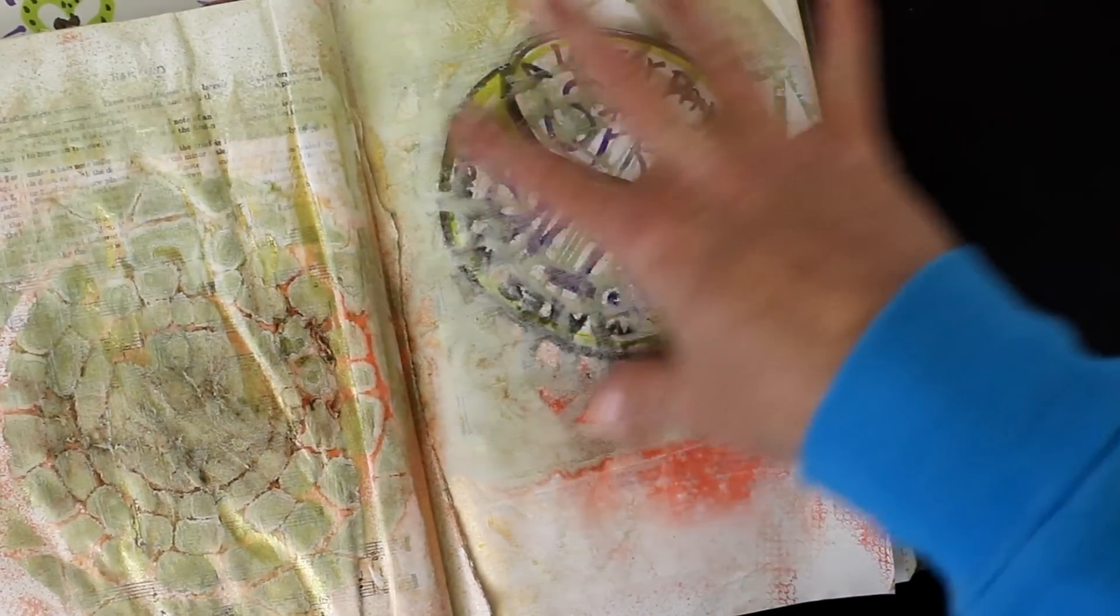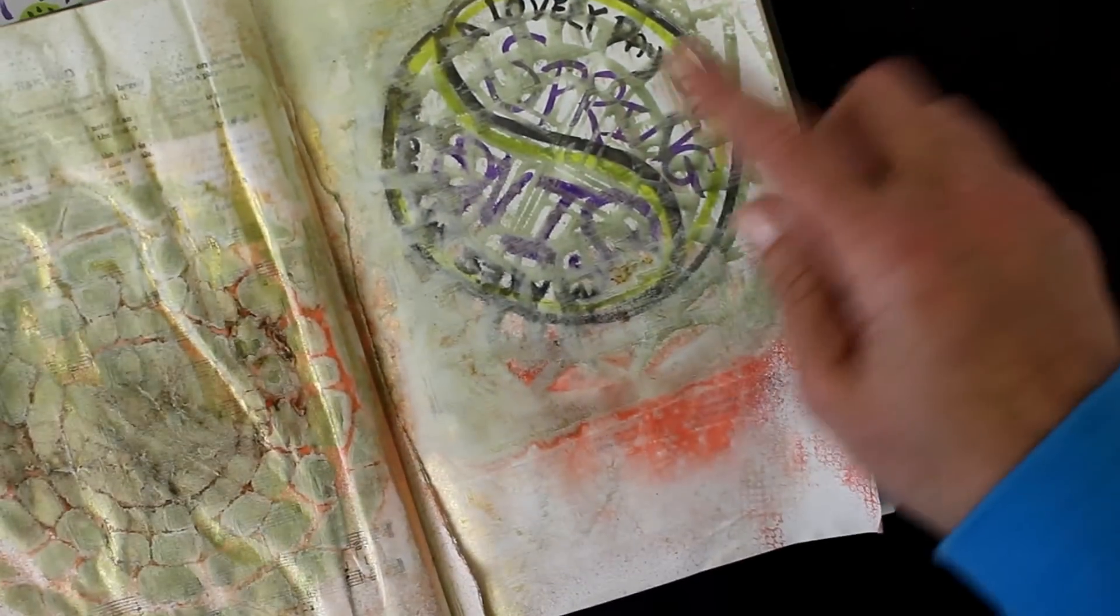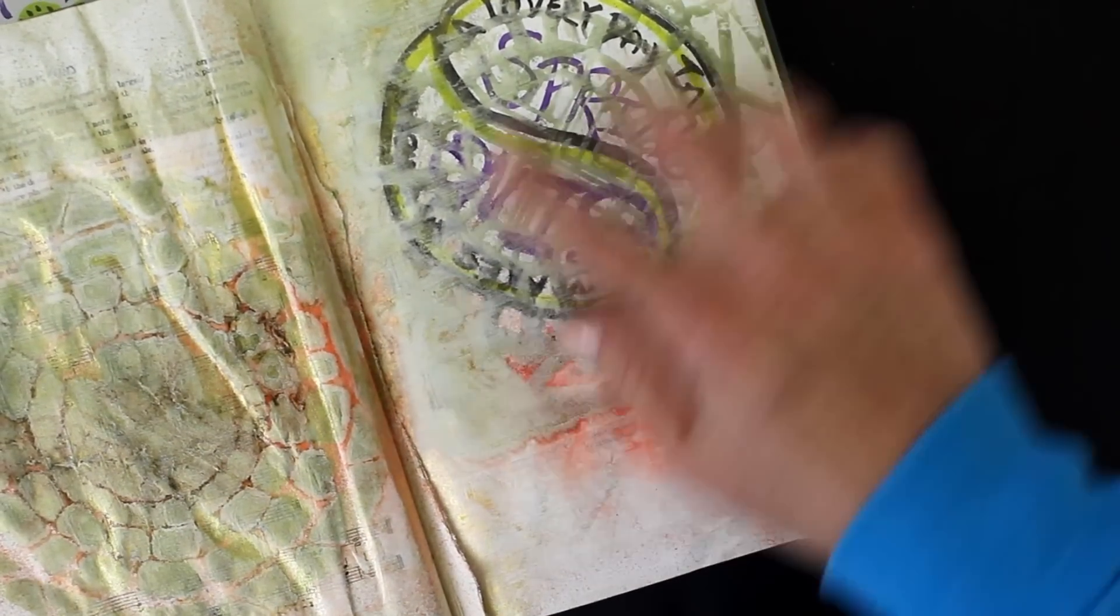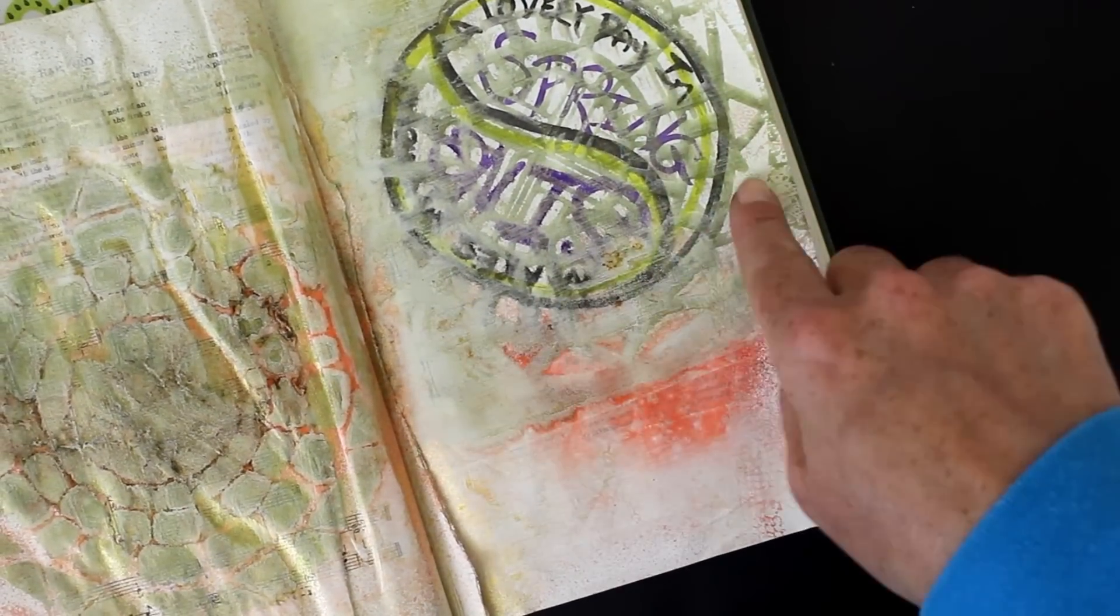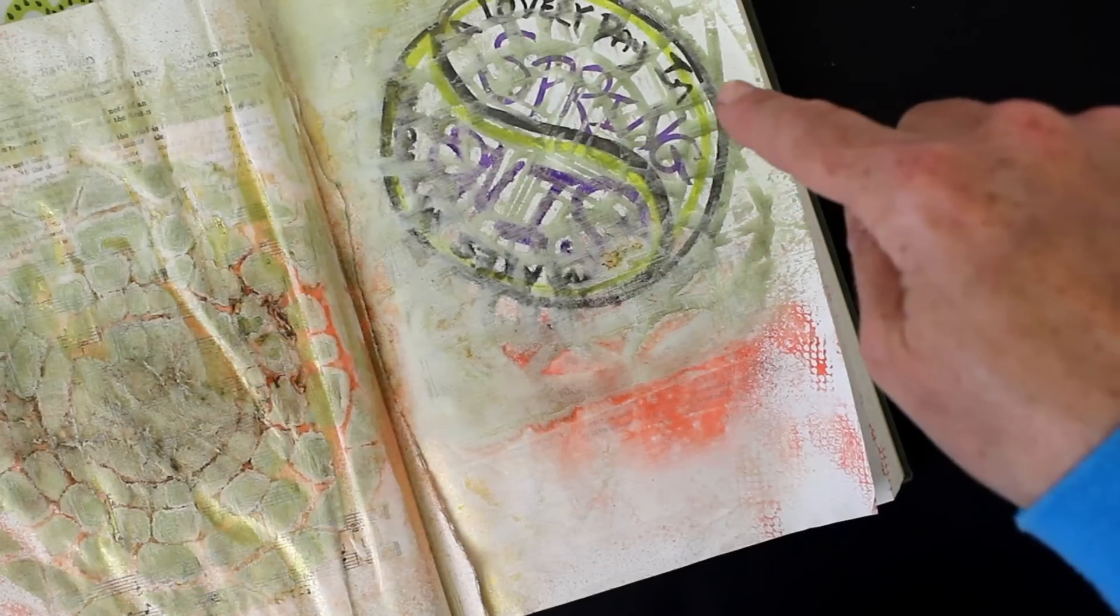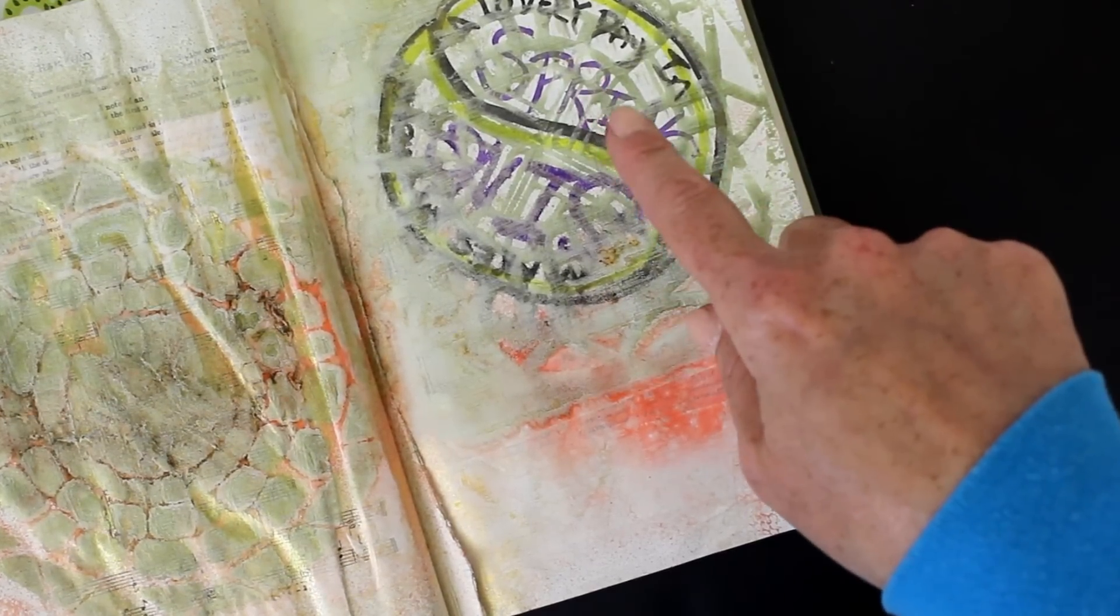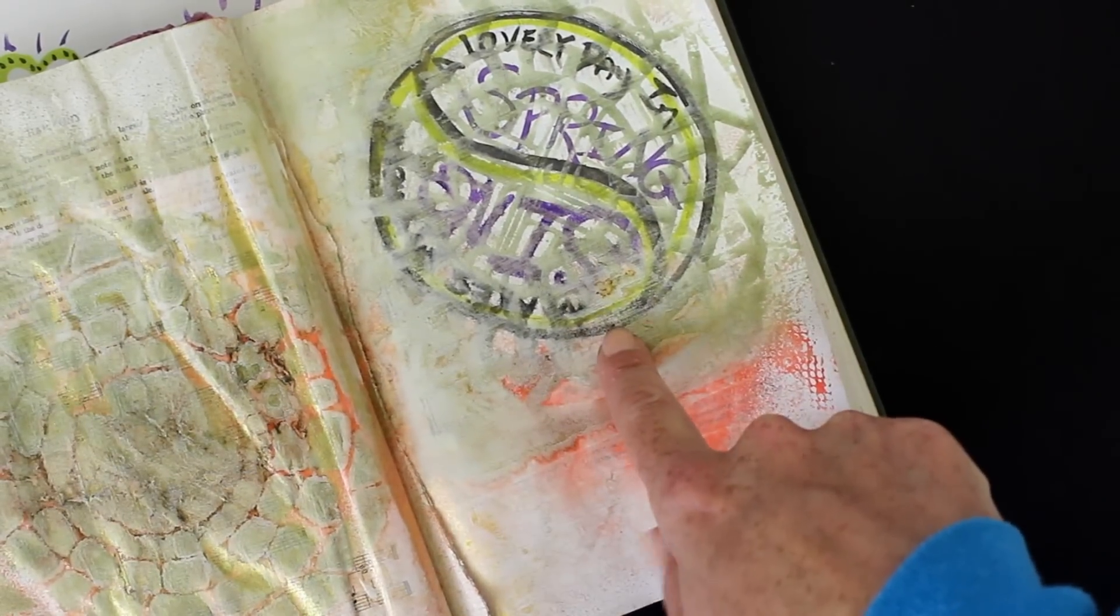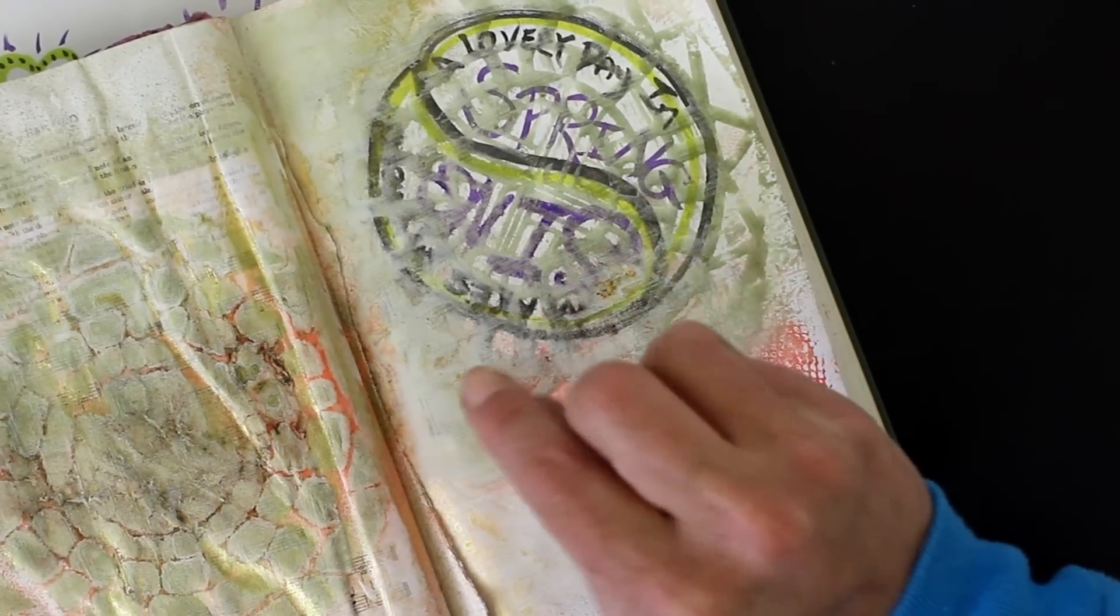Then I did some shimmer sprays over the top and it just bled everywhere. It's horrible, right? But I realized that's because when I gessoed this page first, I coated the surface so that the ink could not absorb.